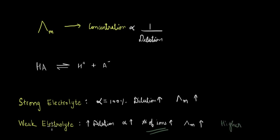But in the case of weak electrolytes, on dilution, the increase of molar conductivity is much higher. Because what happens during dilution of a weak electrolyte is that the degree of dissociation, alpha, increases.